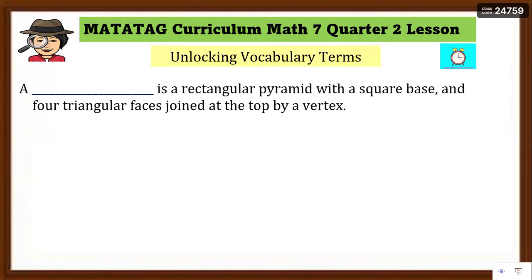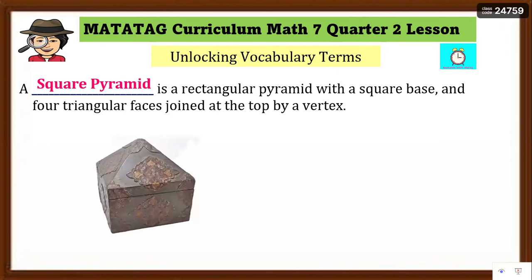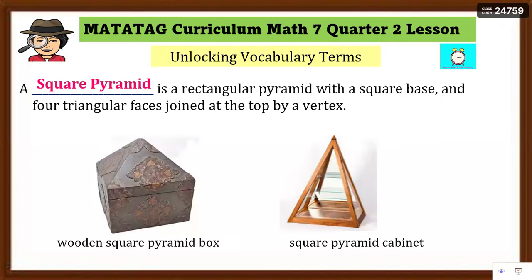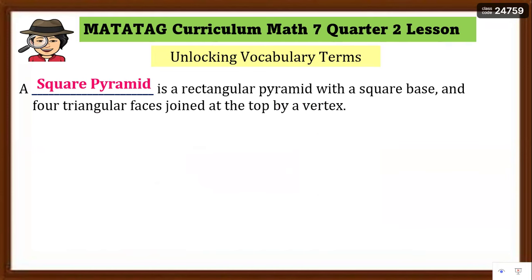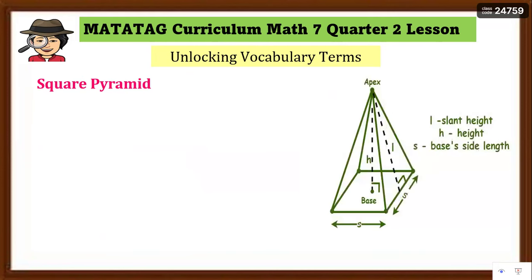Let's unlock the vocabulary terms. I have here the definition — all you have to do is identify the term. Check your answer: that is very good — square pyramid. Remember, it is a rectangular pyramid with a square base. It has a square base, that's why it's called a square pyramid, and four triangular faces joined at the top by a vertex or what we call the apex. Here are real objects we see in daily life: a wooden square pyramid box and a square pyramid cabinet.